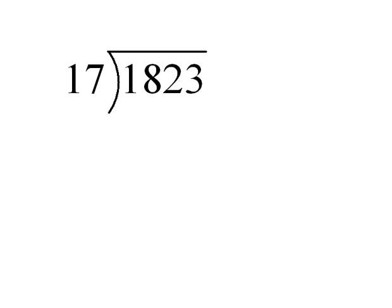So here we have 1823 divided by 17. So again, our process is going to be the exact same. We're trying to decide, digit by digit, where we have to begin that division.